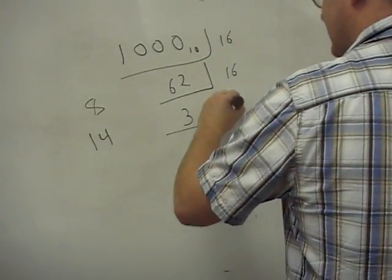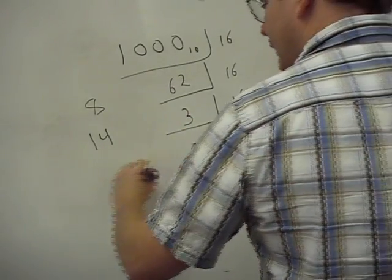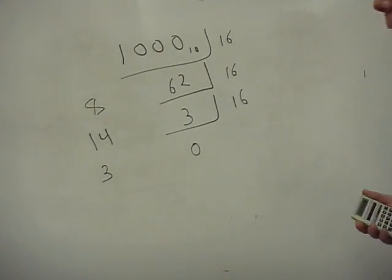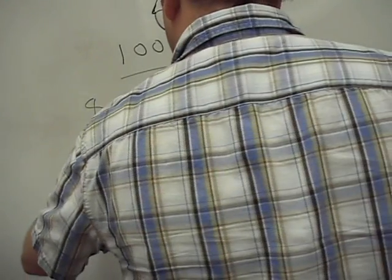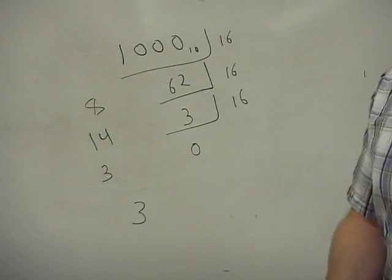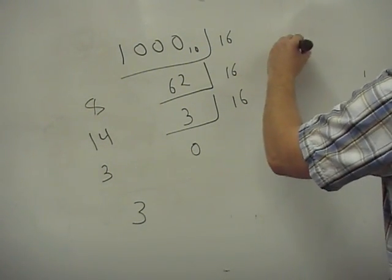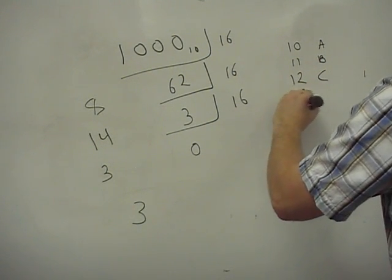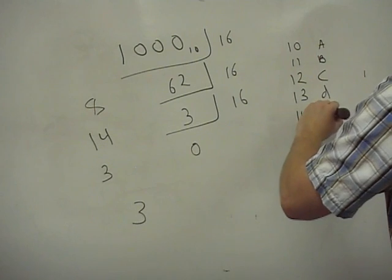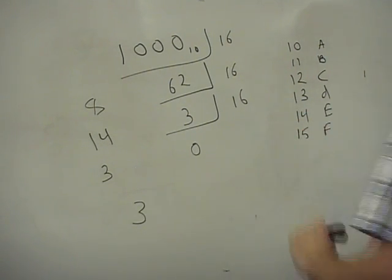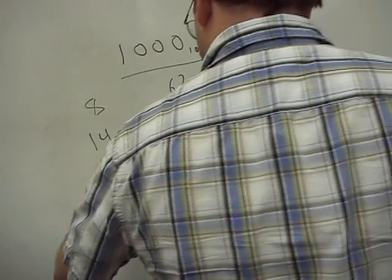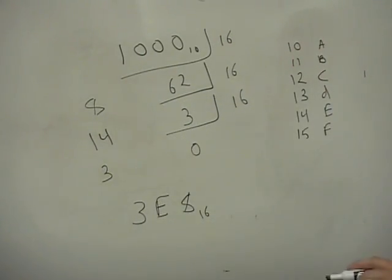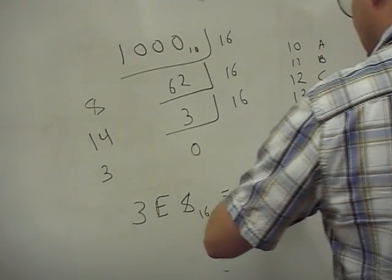And then we divide by 16 again, and this goes 0 times with a remainder of 3. So now we read from the bottom up. Our hexadecimal number is 3. Then we can't write down 14 — we have to write the hexadecimal equivalent. Remember that 10 is A, 11 is B, 12 is C, 13 is D, 14 is E, and 15 is F. So for 14 we write E, and then 8. So 3E8 in hexadecimal is equal to 1,000 in base 10.